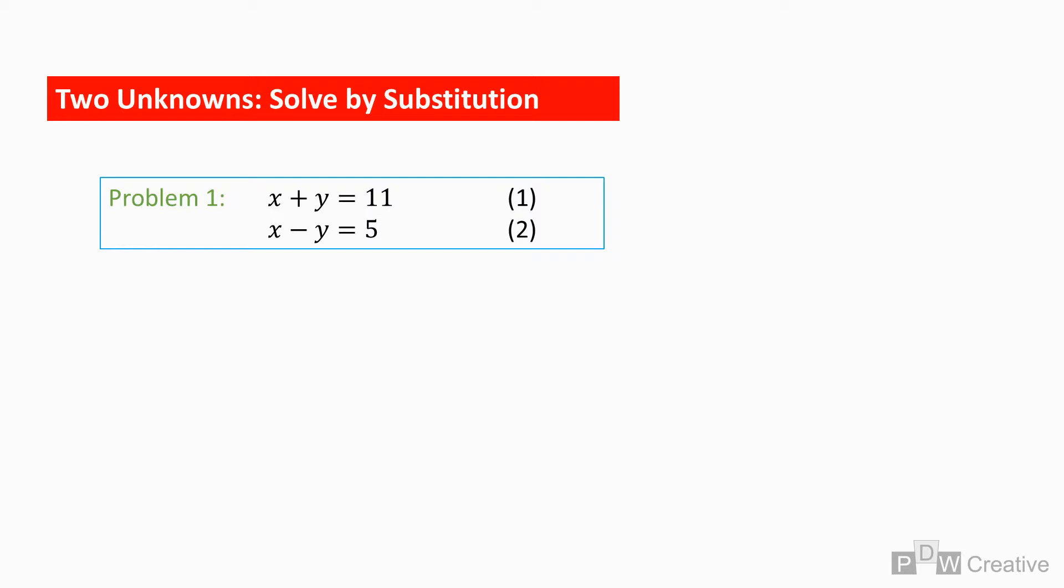Problem one shows two equations featuring unknowns x and y. In this instance, the substitution method offers a quick and easy solution to find both variables. We can take equations one and two without making modifications. This may sound strange, but we will see how modifying equations helps in follow-on examples.